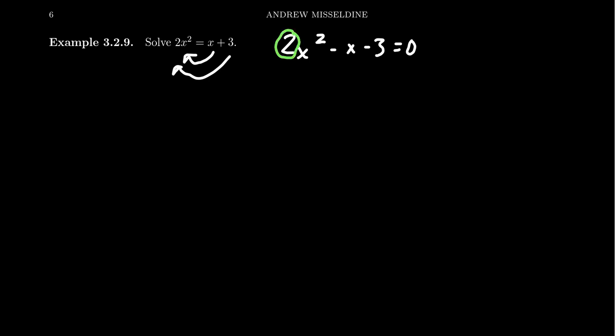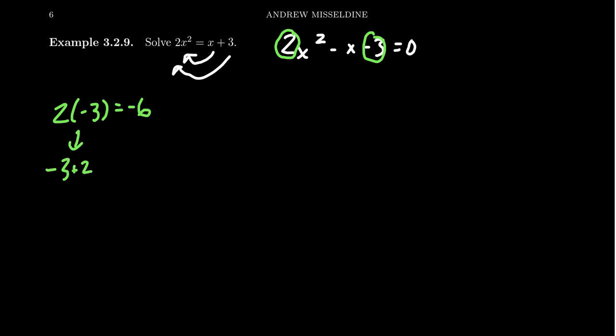Look at the first coefficient and the last coefficient — this is going to give us two times negative three, which is negative six. We need to find factors of negative six that add up to be negative one. You'll actually notice that we already have a magic pair: negative three plus two is equal to negative one. Sometimes the magic pair is just staring in front of you — you just have to pluck it. It's this proverbial low hanging fruit. It'll leave a message in your mind.